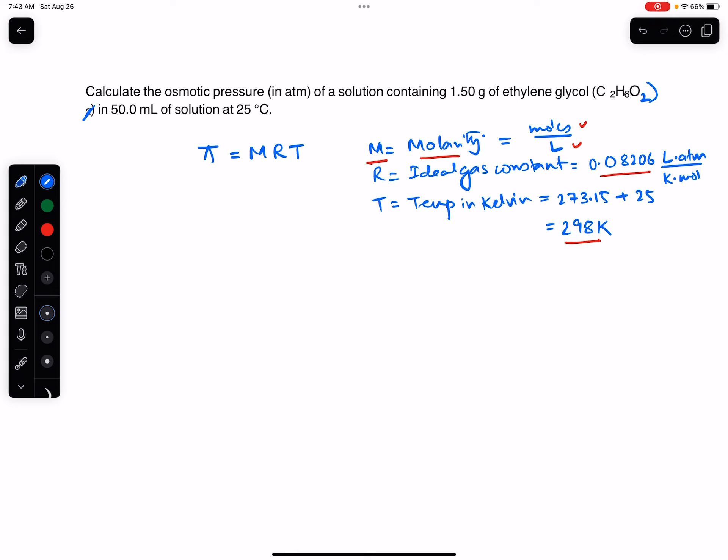So to calculate moles, we're going to use the grams of ethylene glycol given to us, which is 1.50 grams, and we're going to divide that by the molar mass of ethylene glycol, which is 62.07 grams per mole. And that gives us 0.024166 moles.